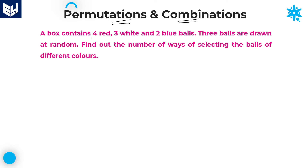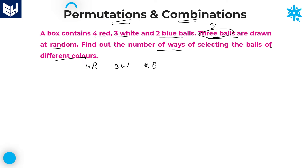A box contains four red, three white, and two blue balls. Three balls are drawn at random. We need to draw three balls. The question asks us to find the number of ways of selecting balls of different colors. Total we need to draw three balls out of four plus three plus two, which is nine balls total.